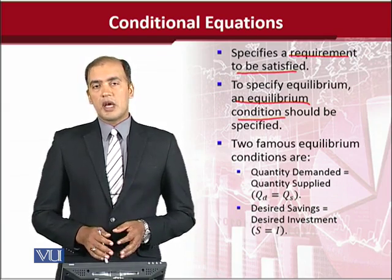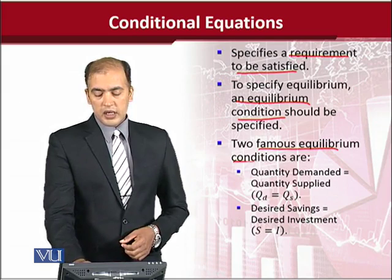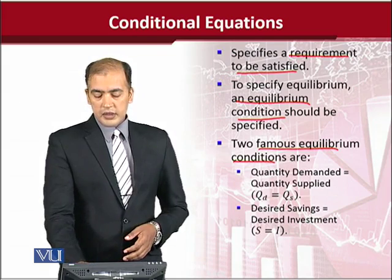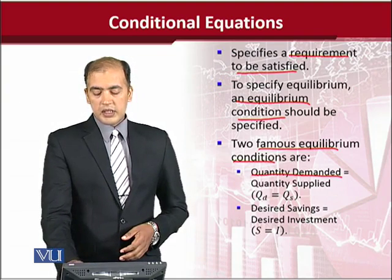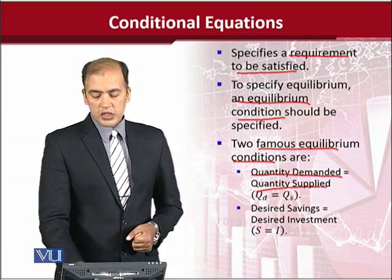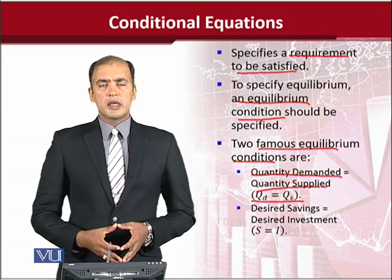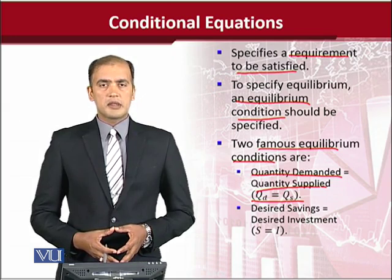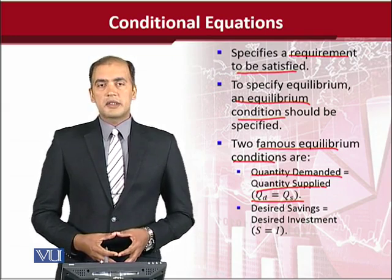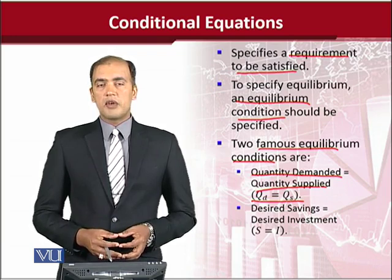It's quite simple actually. We are taking two examples here, and these are two examples of equilibrium condition. One is the condition that says that quantity demanded is equal to quantity supplied — in their notational form, Qd is equal to Qs. This is the equilibrium condition that is extensively used in microeconomic analysis. Once we put that into an equation form, it is actually a conditional equation that is specifying the market equilibrium condition.